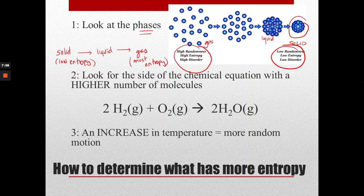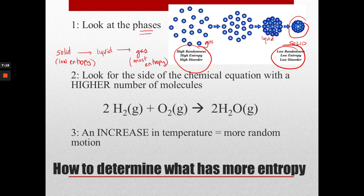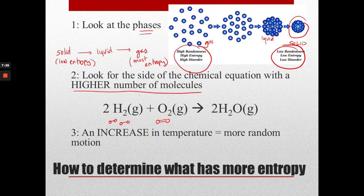Now, what if everything has gases in them? Well, then what you do is you look for the side of the chemical equation that has a higher number of gas molecules. So here I've got two H2 molecules and one O2 molecule, so I have three molecules on the left. And over here, I have only two water molecules.